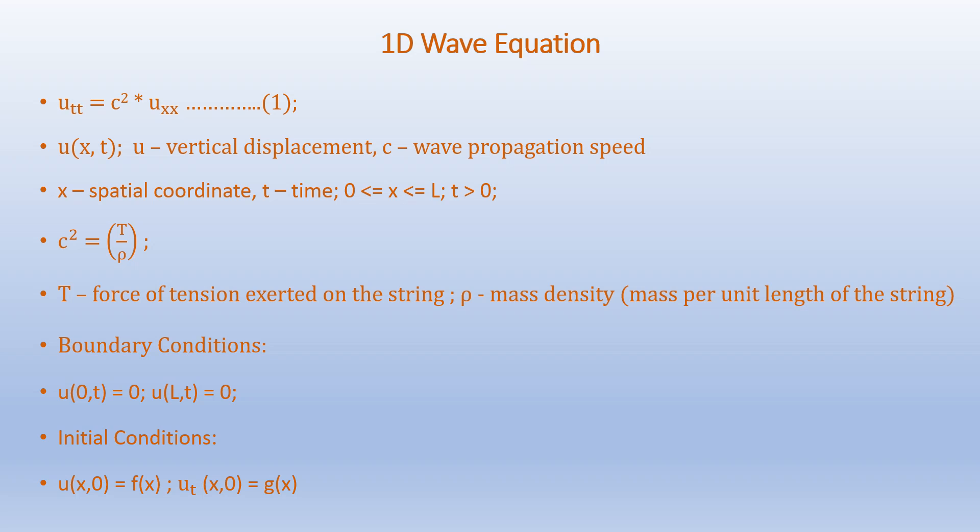The 1D wave equation is described by equation 1 as u_tt equals c squared times u_xx. This is a partial differential equation and the problem we are solving is a hyperbolic type. Here u is a function of x and t, and u shows the vertical displacement. C is the wave propagation speed, x is the spatial coordinate, and t is the time, where x varies from 0 to L and time is greater than 0. Also, c squared equals T over rho, where T is the tension force exerted on the string and rho is the mass density per unit length.